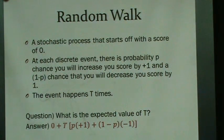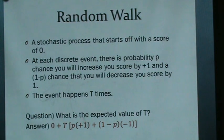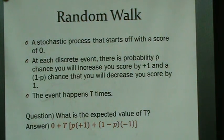Random walks are discrete — they happen at discrete intervals, like once every day or once every second, but the amount of time between steps is always the same.